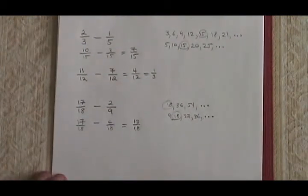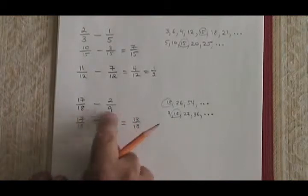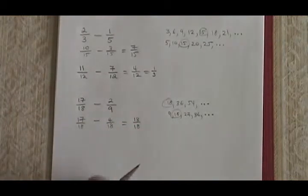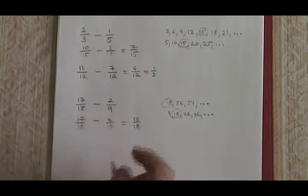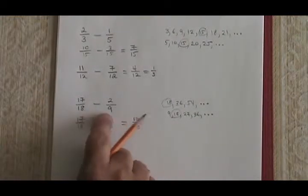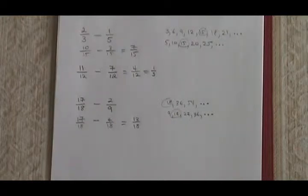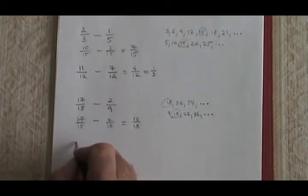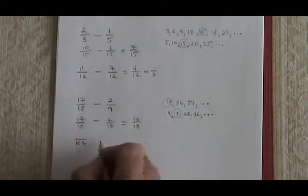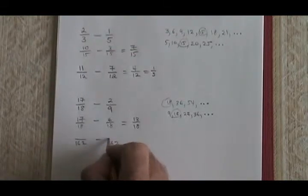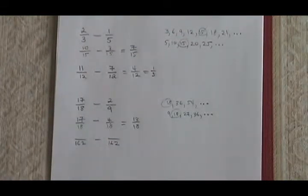If we had tried the trick of just multiplying the denominators we already have, would we get the right answer? Let's try it. 18 times 9 is equal to 162. So we would have to put both fractions over 162. That's a rather large number.